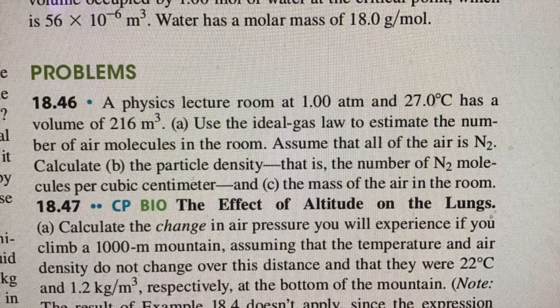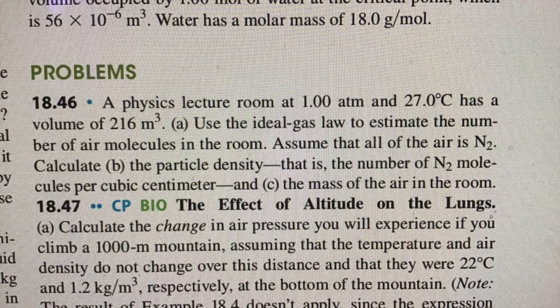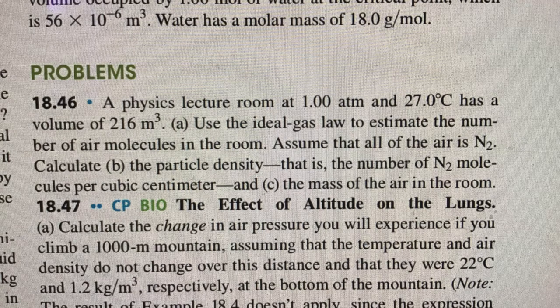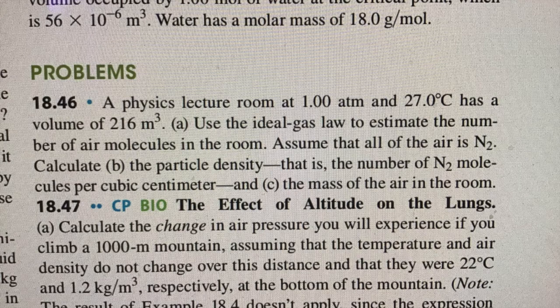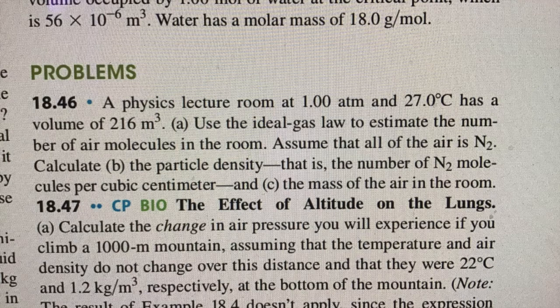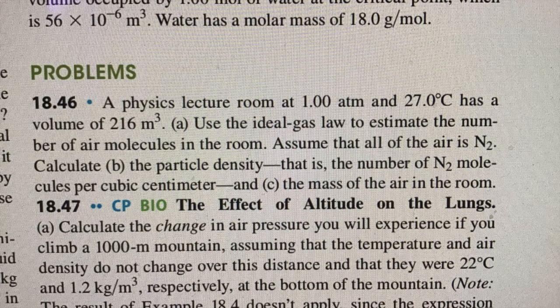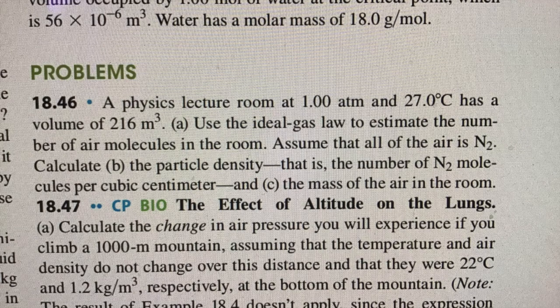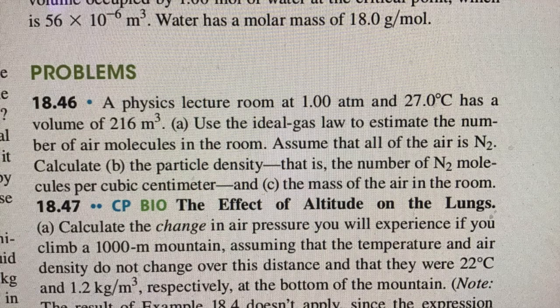So a physics lecture room at one atmosphere of pressure and 27 degrees Celsius has a volume of 216 metres cubed. Use the ideal gas law to estimate the number of air molecules in the room. Assume it's all nitrogen, which isn't much good if you want to do any breathing in the room. And calculate the particle density, that is to say the number of N2 molecules per cubic centimetre in the room and the mass of the air. So there are the three parts of the question that we want to work out.